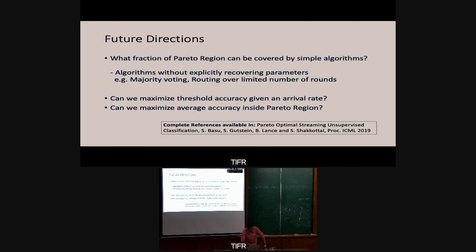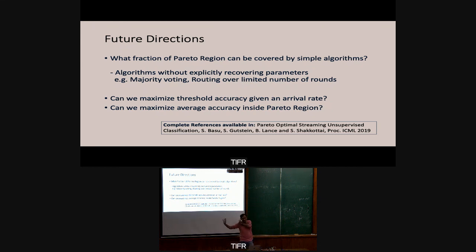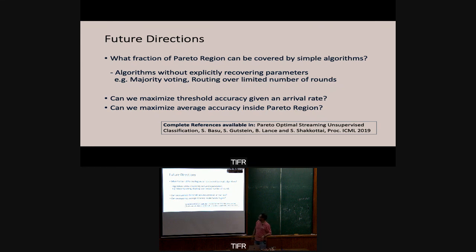In summary, putting everything together: unknown confusion matrices and generative model, but you can learn them and solve the flow problem by combining resource allocation and tensor decomposition. Open problems include minimizing memory, maximizing threshold accuracy given an arrival rate, and understanding the loss from simple algorithms like majority voting. All referenced papers are available in the slides. Thank you.